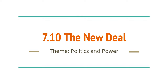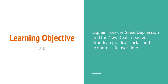Back to lecture number 69. This is historical topic 7.10, the New Deal. The theme today is politics in power. The learning objective for today is to explain how the Great Depression and the New Deal impacted American political, social, and economic life over time.